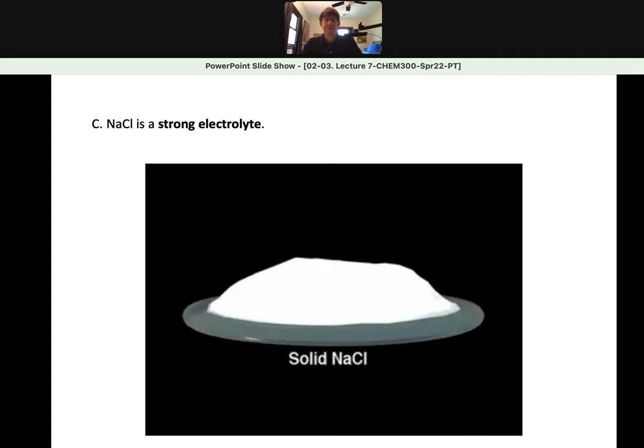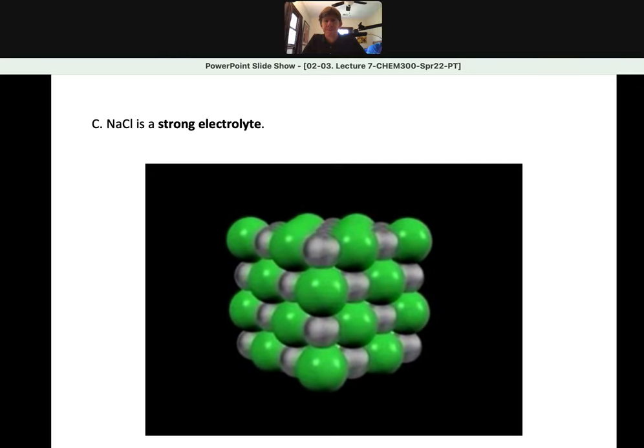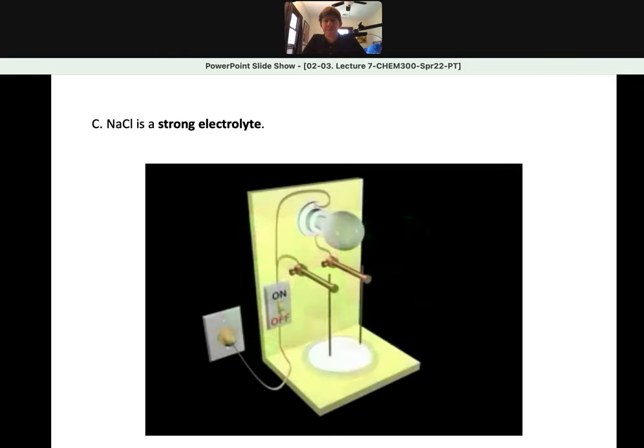We know from various lines of experimental evidence that solid sodium chloride consists of an ordered three-dimensional array of sodium and chloride ions. Solid sodium chloride is not a conductor of electricity. The ions of the ionic lattice are held in place by the strong ionic interactions in the solid and therefore are not free to move under the influence of the electric field.